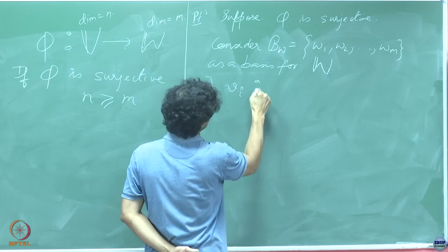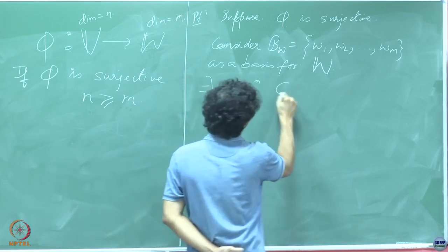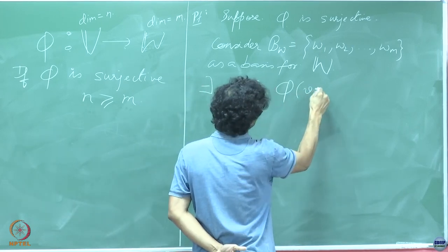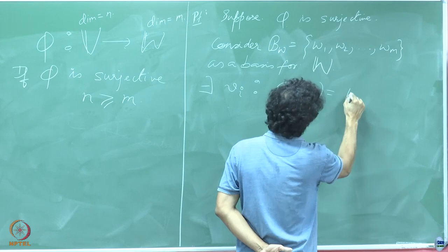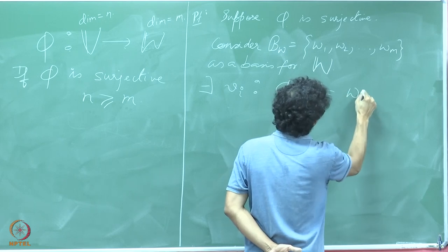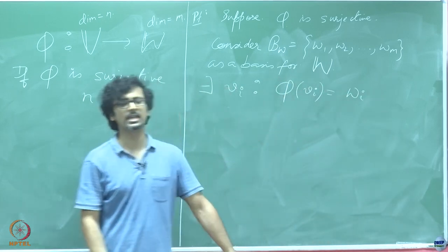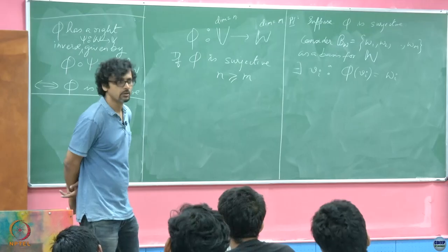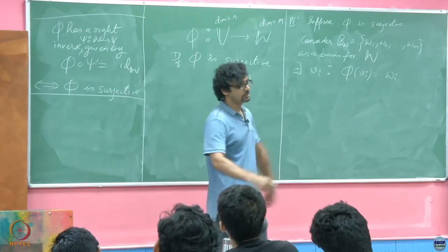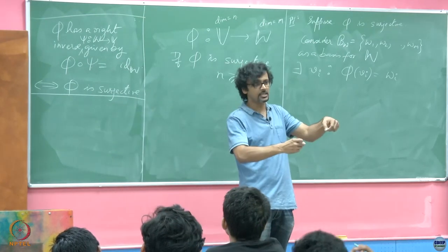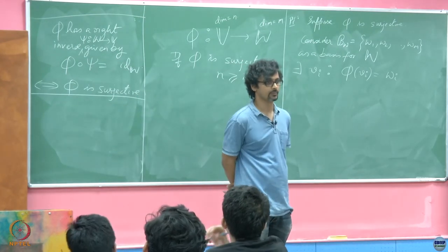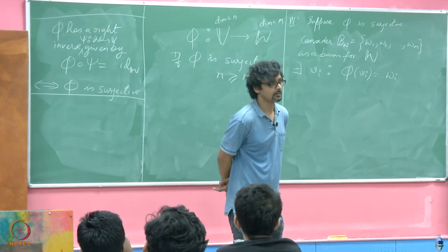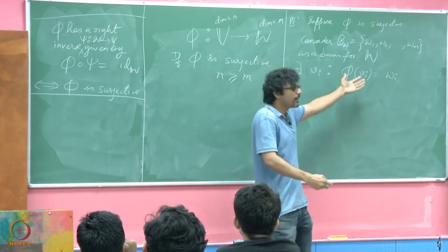Since phi is a surjection, each of these basis vectors in W must have a pre-image under phi in the vector space V. Therefore, for each w_i there exists a v_i such that phi(v_i) = w_i. Note that I am not claiming anything about whether these v_i's are linearly independent or distinct.